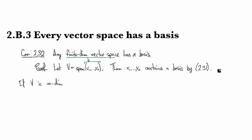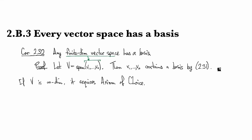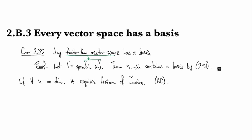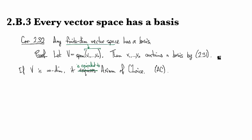Now if V is infinite dimensional, it turns out that it requires something called the axiom of choice, typically referred to as AC. You've probably come across some mention of the axiom of choice before, maybe in a set theory course.